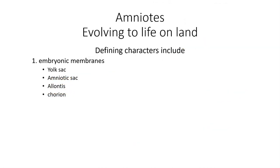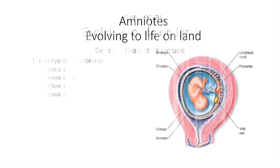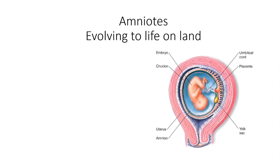Here's one of the first test questions: what are the defining characters of amniotes? The first one is they get their name from the amniotic sac — these are embryonic membranes, and there are four of them. They include the yolk sac, the amniotic sac, the allantois, and the chorion. This is a human uterus, and you can see the baby inside it, the umbilical cord connecting the baby to the placenta, and a very small yolk sac. In mammals, yolk sacs are really reduced — they're still there, but we don't really use them that much.